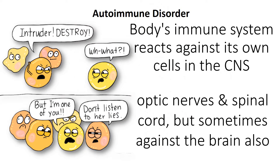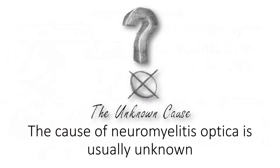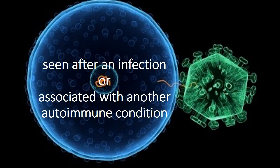It occurs when the body's immune system reacts against its own cells in the central nervous system, mainly in the optic nerves and spinal cord, but sometimes against the brain also. The cause of Neuromyelitis Optica is usually unknown, but may be seen after an infection or associated with another autoimmune condition.